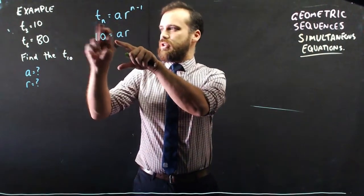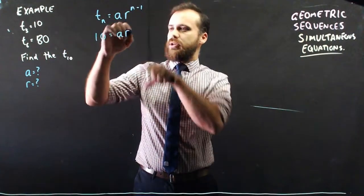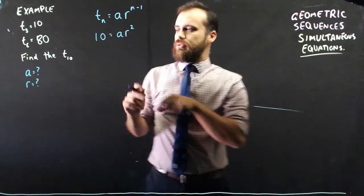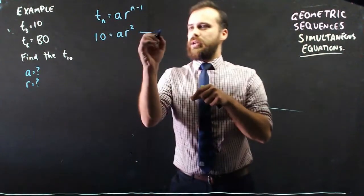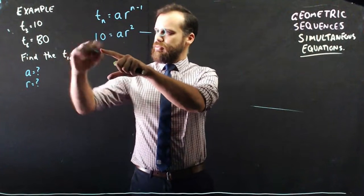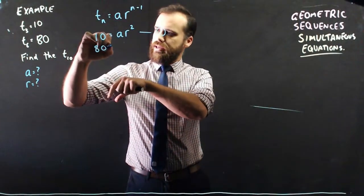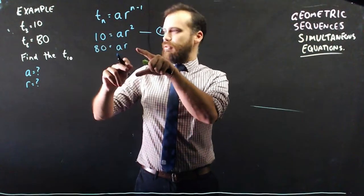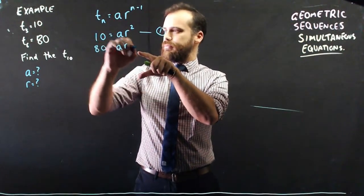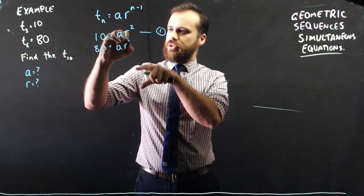But we know that if it's term 3, then it's going to be n minus 1, which is 2. So 10 equals ar squared, and that's equation 1. And equation 2 is term 6 is 80, and that's going to be ar to the power of 5.